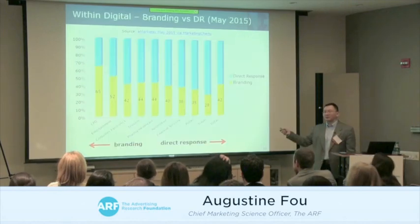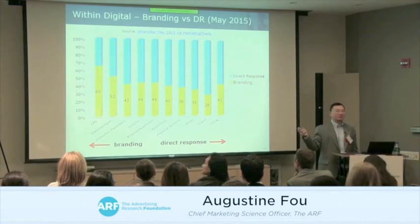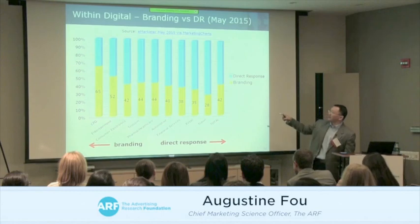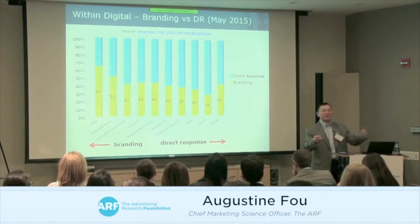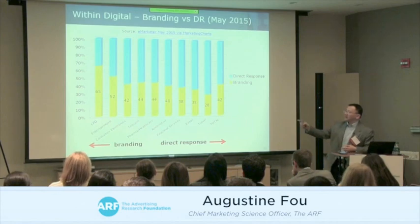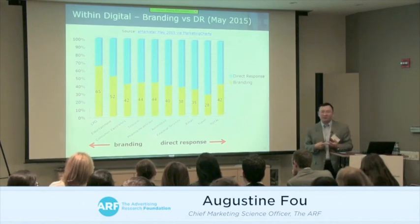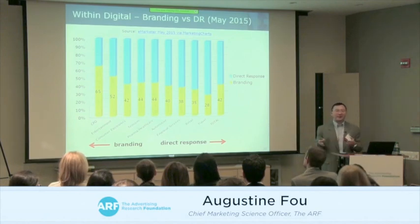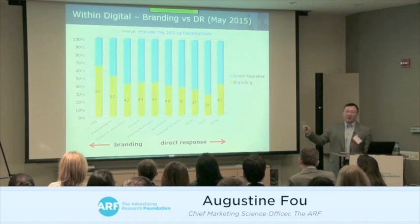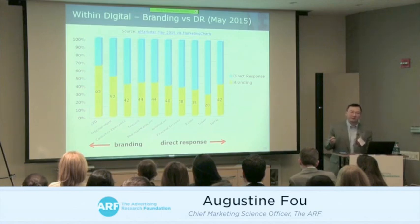In the data, you can see how different industries use digital differently. CPG and entertainment are on the left — they use display and video for branded awareness, like launching a new movie. Retail and travel are on the right — hotel booking sites can track everything through to the actual booking, so they're using digital in a much more performance-oriented manner.